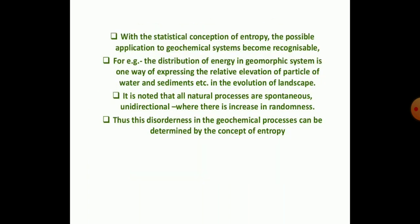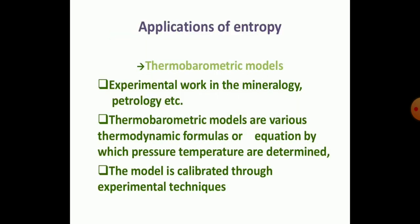The degree of order to disorder in a system may be described in terms of probability of the observed state. With the statistical conception of entropy, the possible applications to geochemical systems become recognizable. For example, the distribution of energy in a geochemical system can explain the relative evaluation of particles and sediment — such as the evolution of a landscape. Natural processes are spontaneous and unidirectional, showing an increase in randomness.